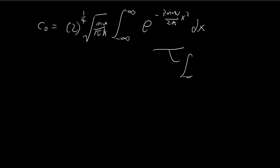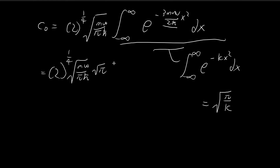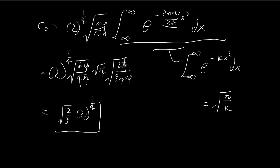The Gaussian integral formula states that ∫exp(−kx²)dx = √(π/k). Here k = 3mω/2ℏ, so the integral equals √(2πℏ/3mω). After crossing out matching factors in the numerator and denominator, we are left with c₀ = √(2/3) · 2^(1/4).